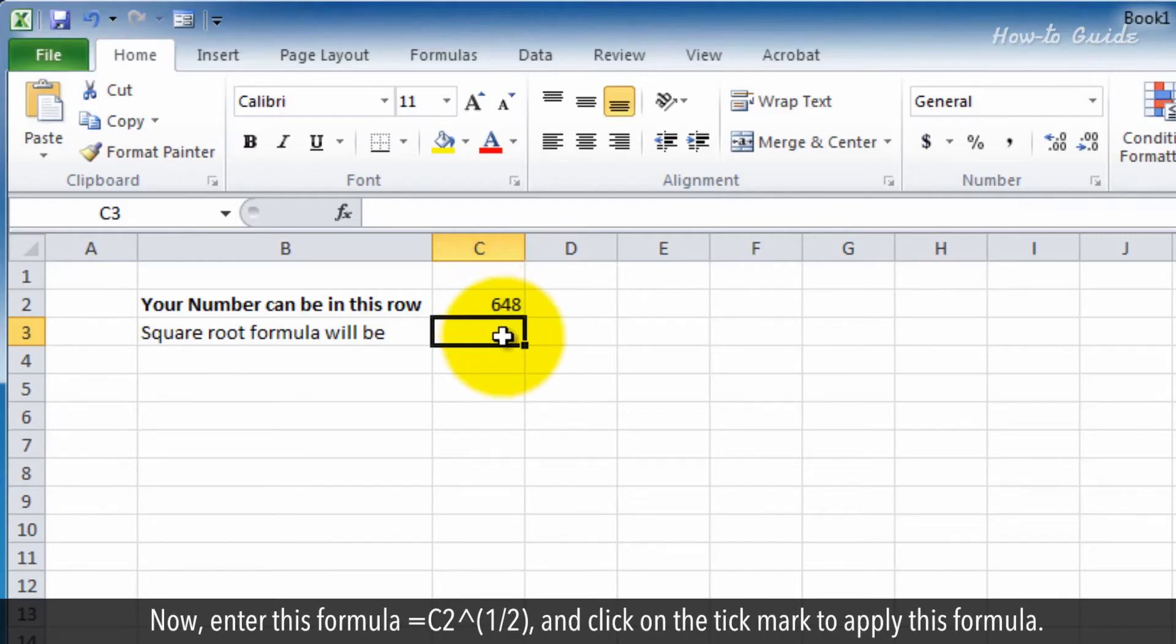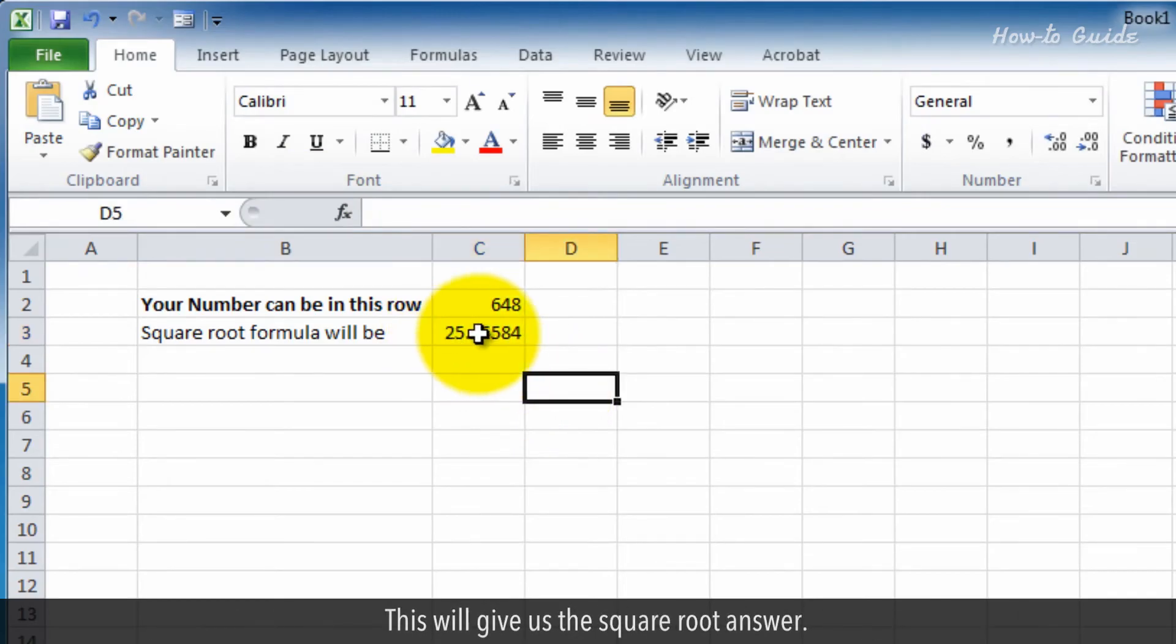Now enter this formula: =C2^(1/2). Click on the tick mark to apply this formula. This will give us the square root answer.